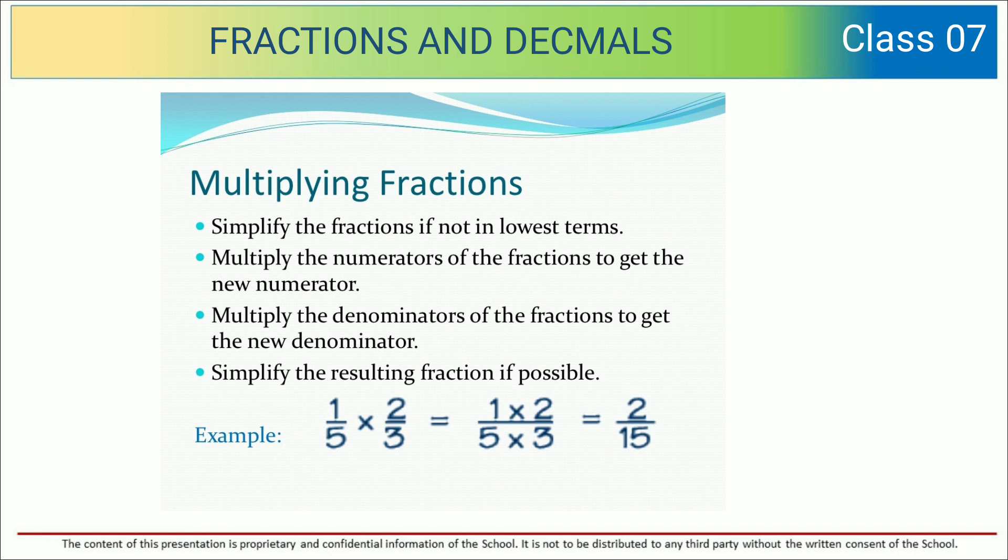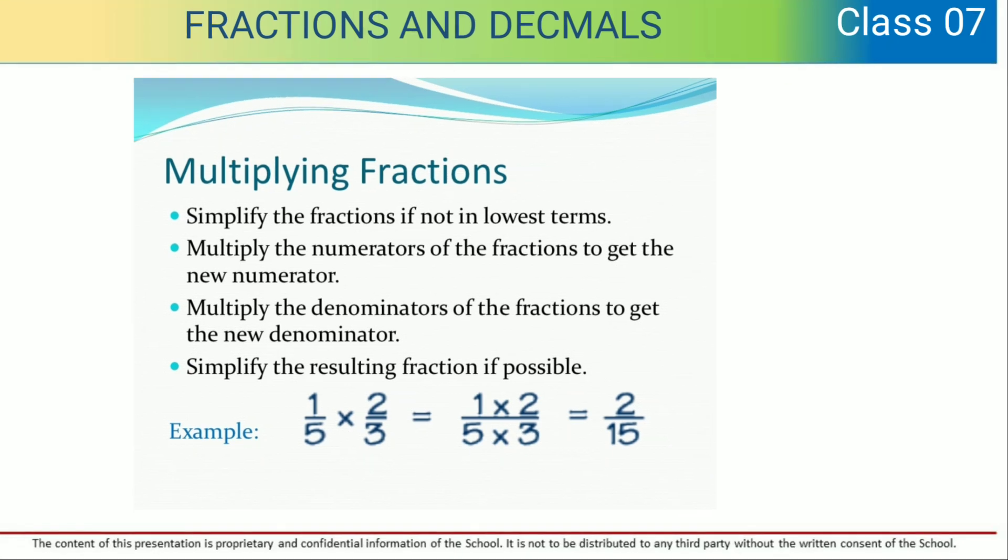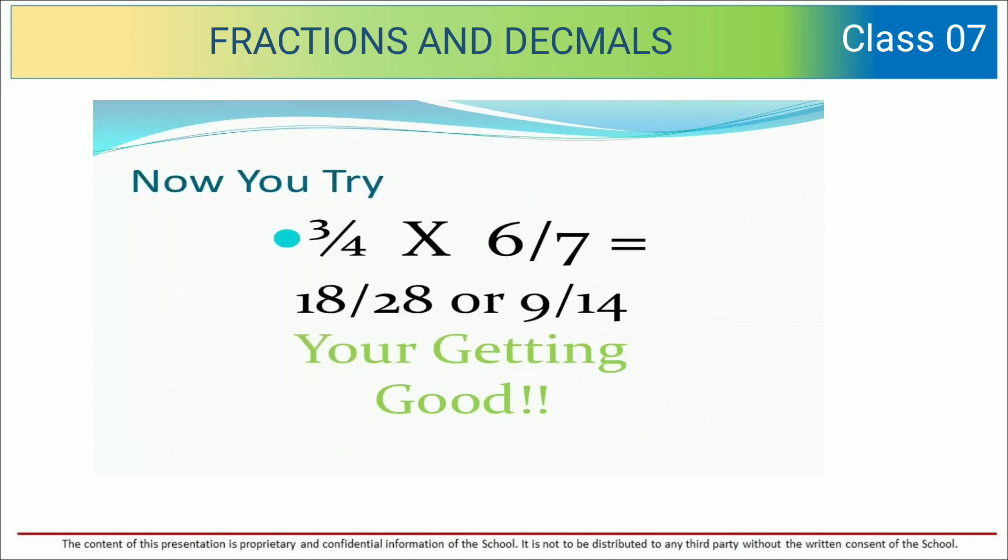For example, 1 upon 5 multiplied by 2 upon 3. In case of multiplication, you can multiply the numerators directly and multiply the denominators together. So you get the final answer: 2 upon 15.